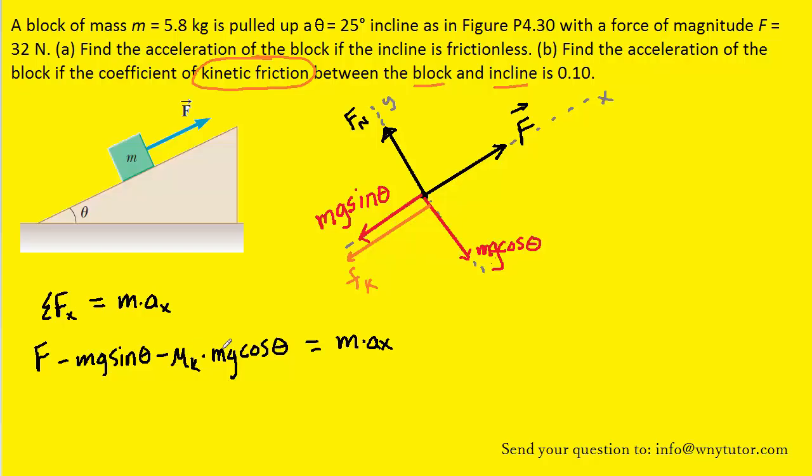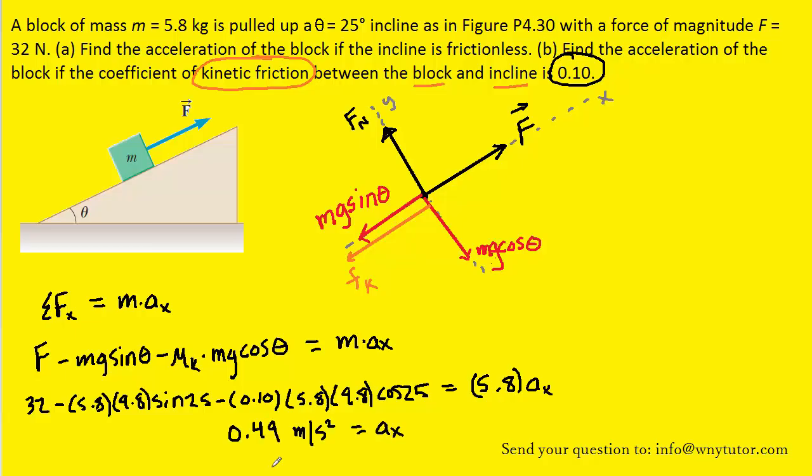We are now ready to substitute in all the known values. Recall that the coefficient of kinetic friction, this mu sub K, was given to us as 0.1. So let's plug in all the known values. Use your calculator to simplify the left side, and then divide both sides by 5.8 to give the acceleration. And you should get a result of 0.49 meters per second squared.